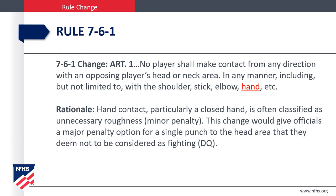Rule 7-6-1. We had a lot of discussion about this, but we've often seen players go into the boards with their hand up and hit a player in the face and helmet. Officials were not calling it as a roughing penalty or a fight, but it's important that players keep their hands down. This change gives officials the ability to give a major penalty option for a single punch to the head area that they deem not to be considered a fighting disqualification, but that was nonetheless a punch to the player.